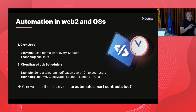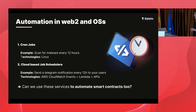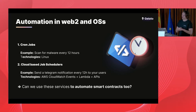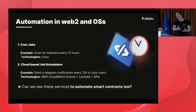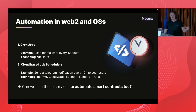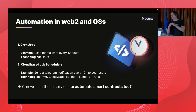If you think about the parallels in Web2, you have cron jobs — recurring tasks that run on your Linux machine, like scanning for malware every 12 hours. Or in Web2 software-as-a-service applications, you have cloud-based job schedulers. Maybe you want to notify your users about something every 12 hours — you don't want to send that email manually. Usually what you do is combine technologies like AWS CloudWatch, Lambda, and some APIs to send information to your users on a recurring or conditional basis.